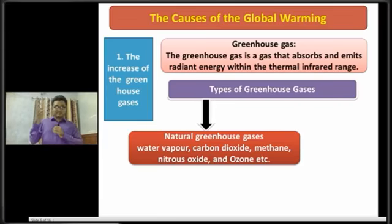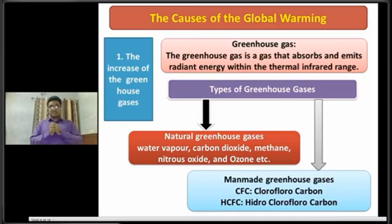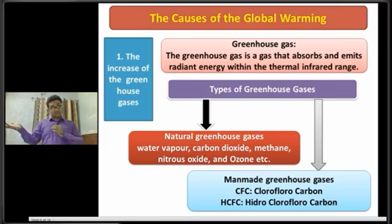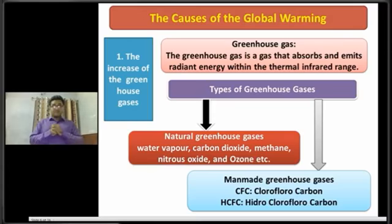The next type is man-made greenhouse gases. These are CFC, that means chlorofluorocarbon. Refrigerators, air conditioners, and sprays are the sources of CFC and HCFC gases. That's all about the first cause of global warming.